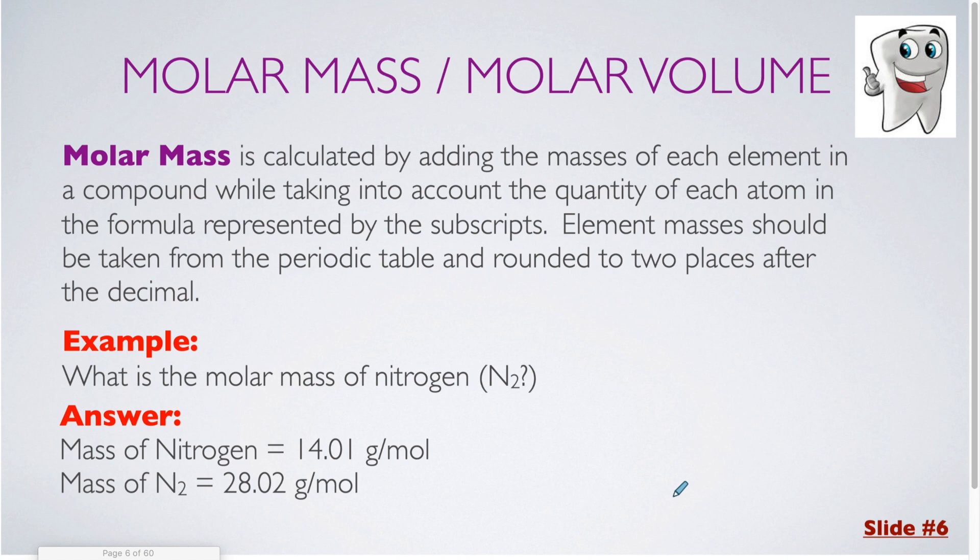Next up, how to determine the molar mass or molar volume for a substance. Molar mass is calculated by adding the masses of each element in a compound while taking into account the quantity of each atom in the formula represented by the subscripts. Element masses should be taken from the periodic table, and we know for molar masses we're supposed to round two places after the decimal. So this is all stuff that we've actually done before.